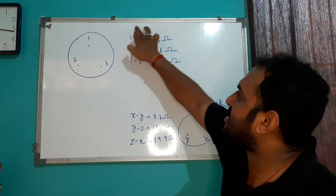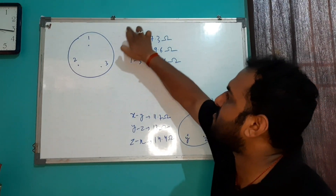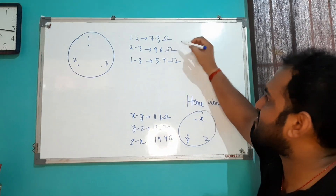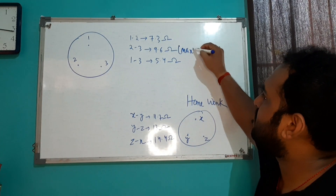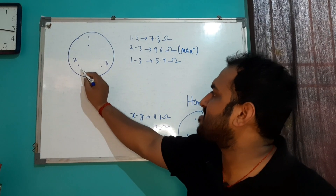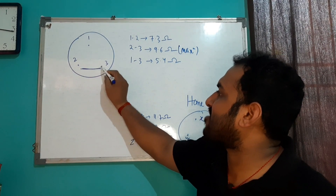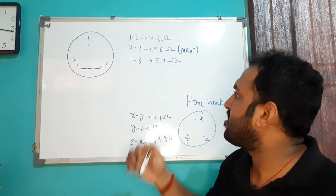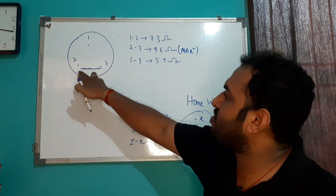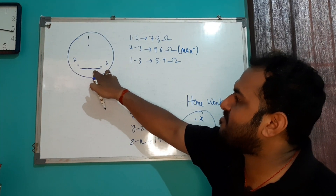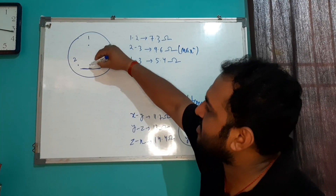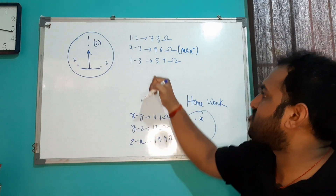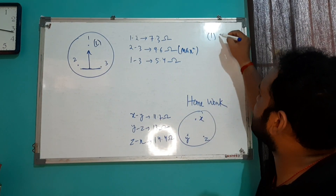The maximum resistance is 9.6 ohms, across the two and three points. So the terminal exactly in front of this maximum resistance pair — that is terminal one — is your C point, your common terminal.